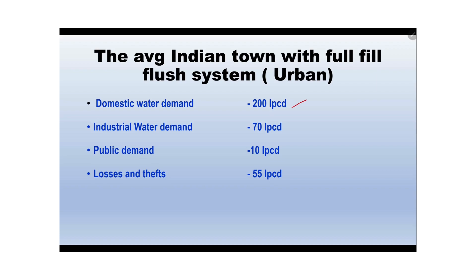For an urban area with a flush system, the domestic water demand is 200 litres per capita per day. Industrial demand and water demand: 70 LPD. Public demand is also accounted for. Losses and theft: 55 LPD.